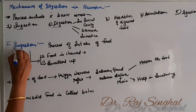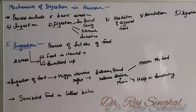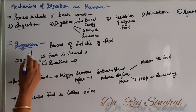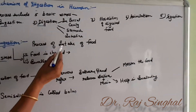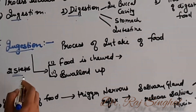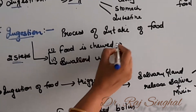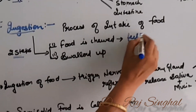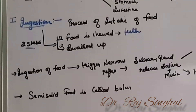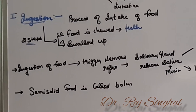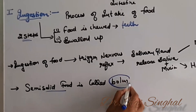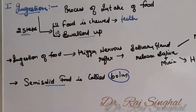The first step of nutrition is ingestion. Ingestion occurs in two steps. Ingestion actually means intake of food. After the intake of food, the food is chewed up with the help of teeth. It is masticated and broken down into simpler pieces. This semi-solid food is known as bolus and then it is swallowed.